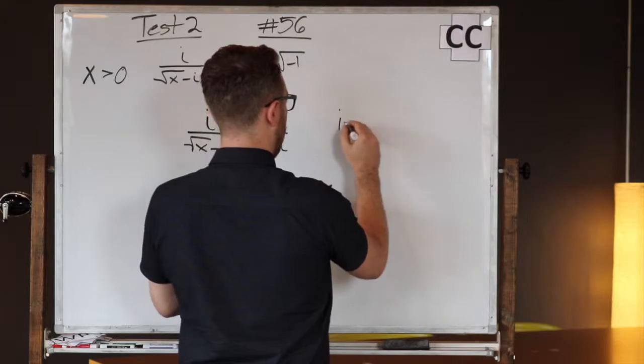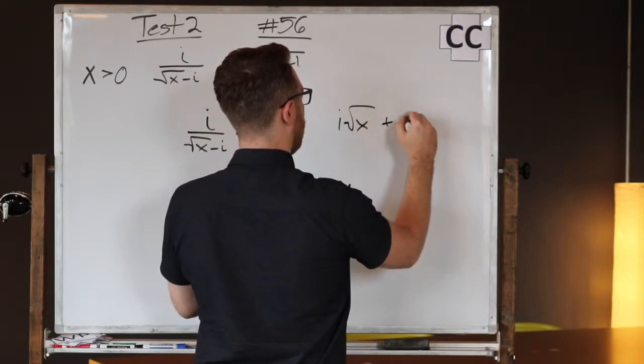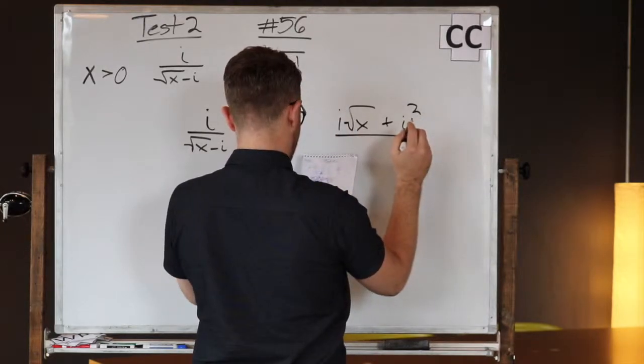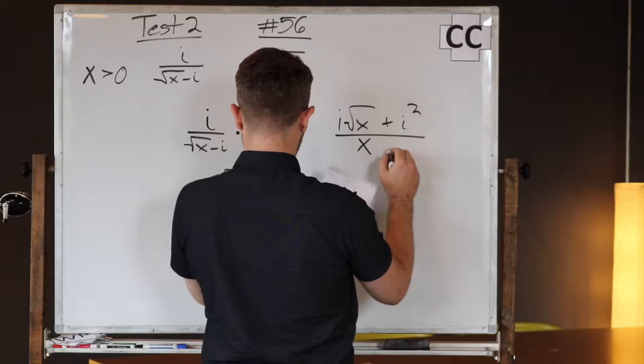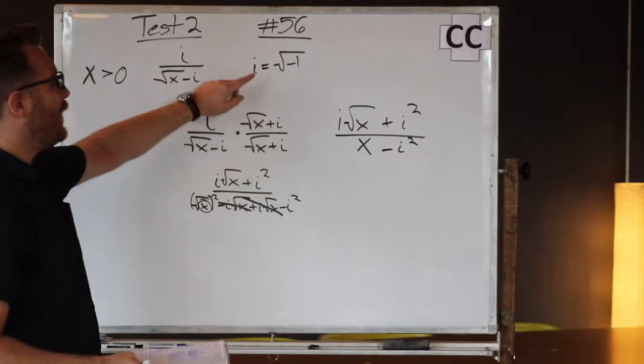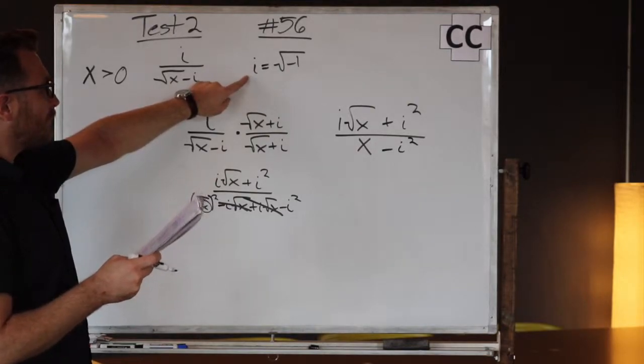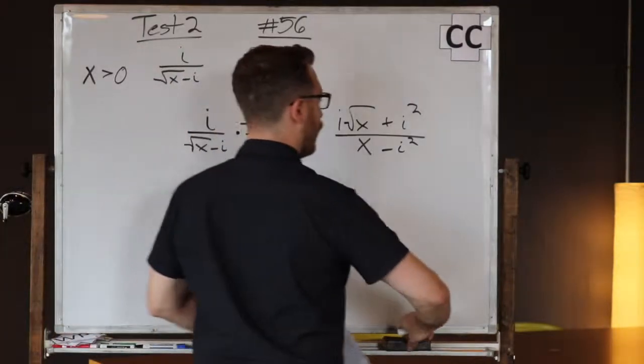i√x plus the square root of i over just x minus i². But remember that i² equals negative one, so really these are...